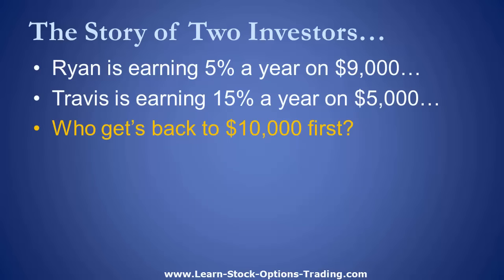Ryan with a $9,000 account earns 5% a year; I earn 15% a year on my five grand. The question is: who gets to $10,000 first? If you picked Ryan, you're correct. Most people pick me because I'm earning three times more, but Ryan actually gets back to $10,000 in roughly two years. Me, earning 15% — three times more — it still takes me five years to get back to my original investment.